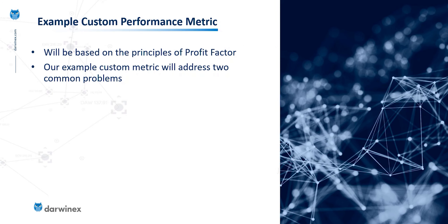Let's now take a look at the custom performance metric we're going to develop as the example in today's tutorial. Firstly, this will be broadly based on the principles of the profit factor metric. The reason I'm using this as the starting point is that it's something most traders understand, including the calculation behind it. It's also fairly simple — basically the sum of the profits from all profitable trades divided by the sum of the losses from all losing trades.